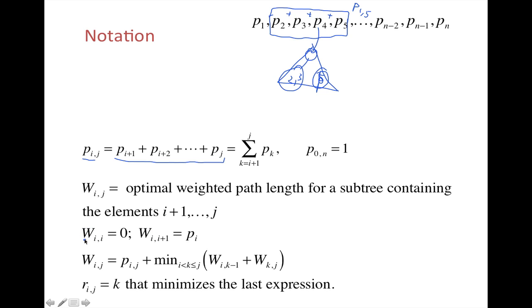So wij is when we try all possibilities and take the minimum. The wii corresponds to no elements—it's empty, so we define it as 0. wii+1 is exactly one element with probability pi, so the weighted path length is simply pi.